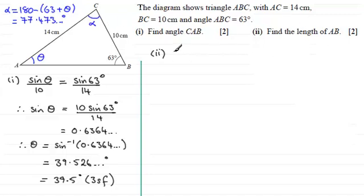If we use the sine rule, I'm going to take the side AB and compare that with the sine of the opposite angle, which is alpha. That would equal another side—I'm going to take the 14—divided by the sine of 63 degrees. You could equally take the 10 and divide by sine theta.